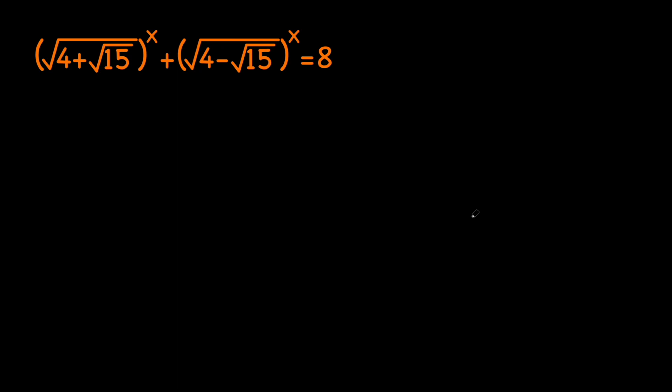Hey there guys, today we're going to be solving an Iranian Math Olympiad problem where we have an exponential equation. We have the square root of (4 plus root 15) to the x power plus the square root of (4 minus root 15) to the x power equals 8, and we're supposed to solve for x.